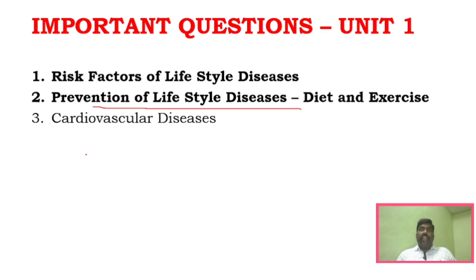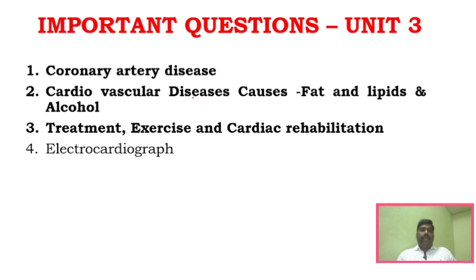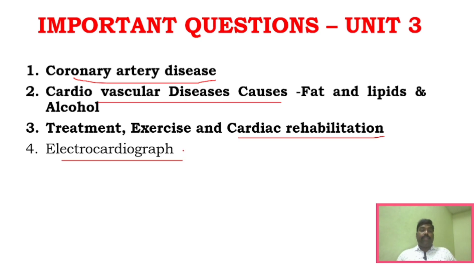For cardiovascular diseases and respiratory diseases, there are questions you should know well. Units 1 and 2 will have around 4 confirmed questions each. For unit 3, similarly, in electrocardiograph and echocardiograph, you should know what is what — there will be around 3 questions from unit 3, so make sure you understand electrocardiograph clearly.